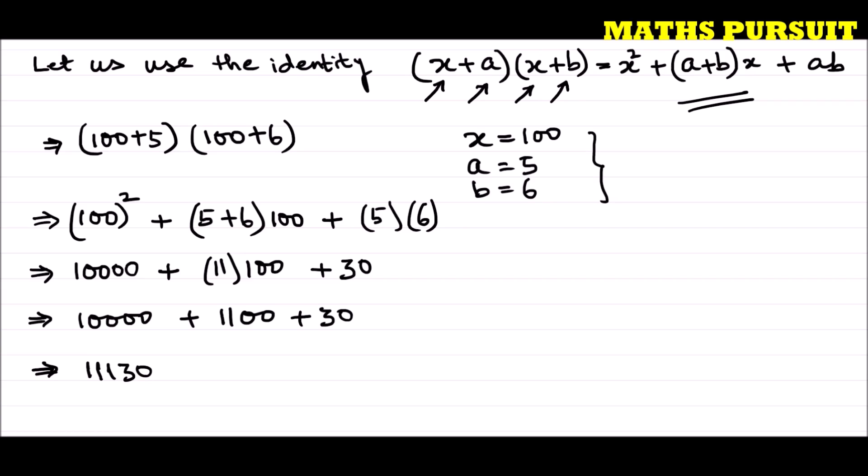What we got when we solved the given expression 105 into 106 is 11,130. We did it without multiplying directly.